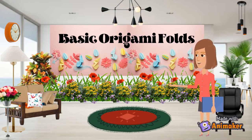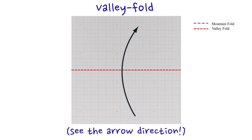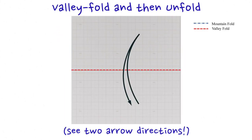The first basic Origami fold is the Valley Fold. This is designated with a dash line and a fold arrow. This is also the bread and butter of Origami. All Origami models will have at least one valley and/or mountain fold.